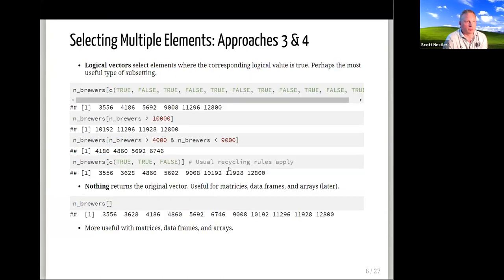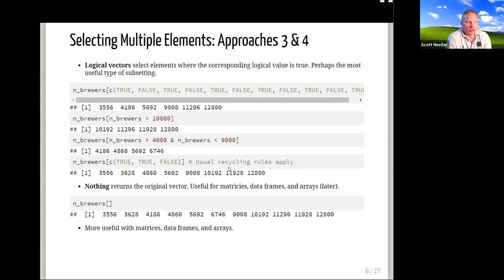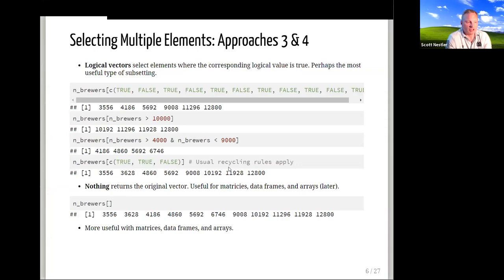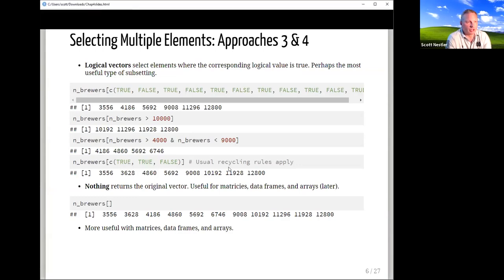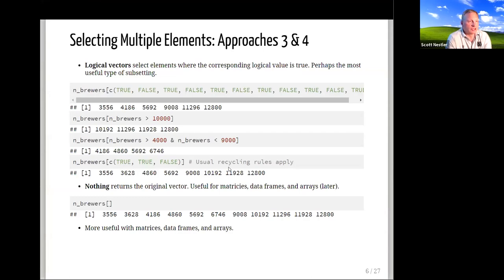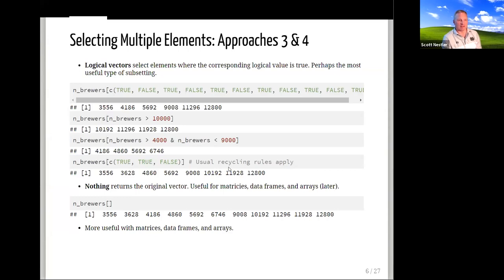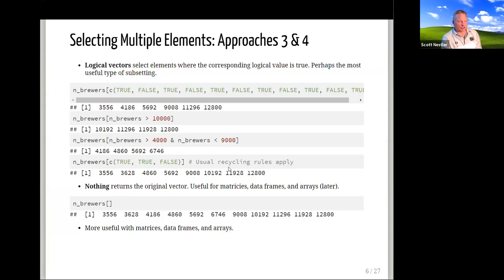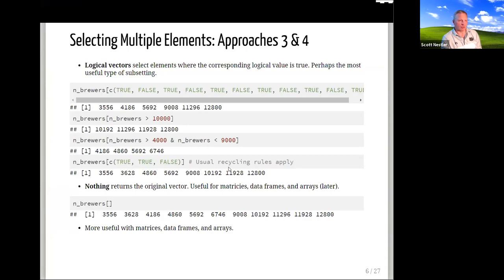Approaches three and four for selecting multiple elements are logical vectors, where we pick elements corresponding to TRUE values. This is probably one of the more useful things. We often want to specify some condition, figure out if it's true or not, and then do subsetting based on that. Here I put in a bunch of TRUEs and FALSEs and selected every other one. Another way is to specify a condition where elements meet a certain threshold, like greater than 10,000 — finding which years had more than 10,000 brewers. We can also combine two conditions with Boolean operators.